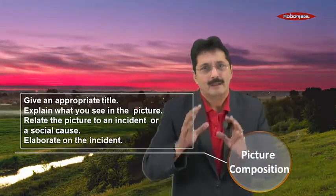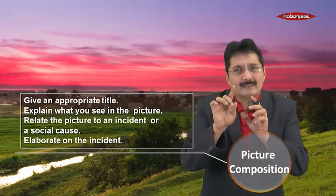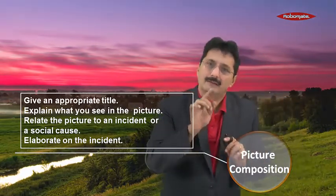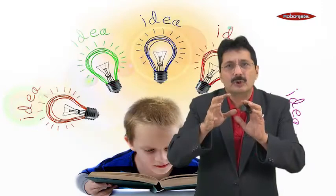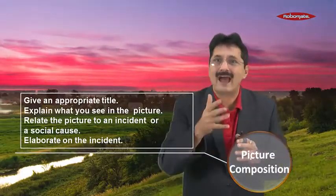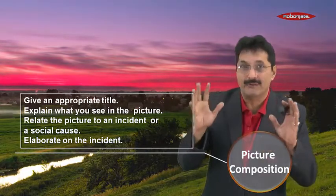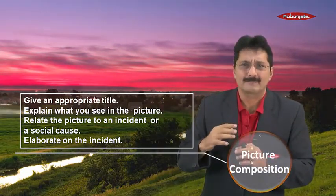For picture composition, first explain what you see in the picture. Try to look at the images in the background — these may give you a very strong message. For example, if the picture shows an illustration of a child studying, look out for a clock in the background which may be striking somewhere around midnight. Immediately you get a lot of ideas and imagination for an interesting narrative. Relate the picture to an incident or a social cause, elaborate on the incident, and you are going to kill it there.